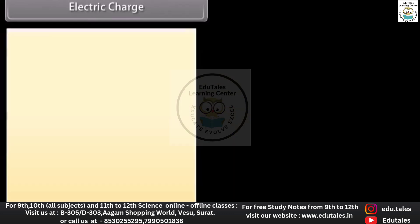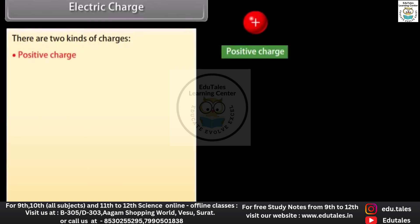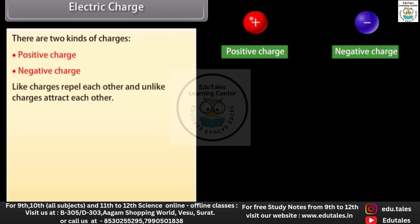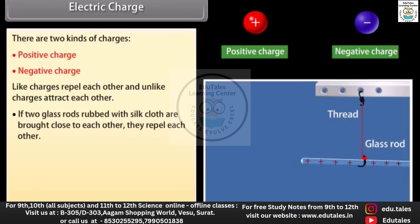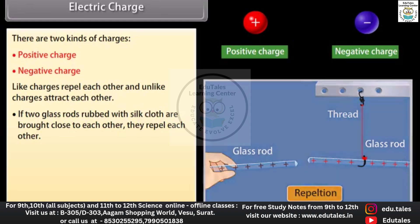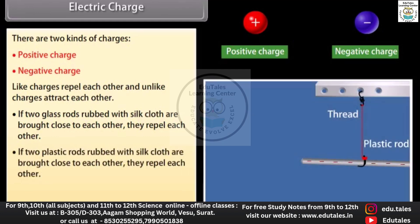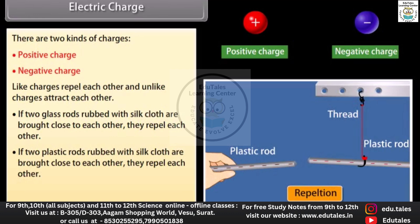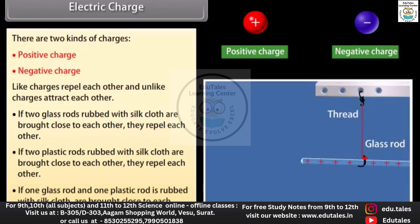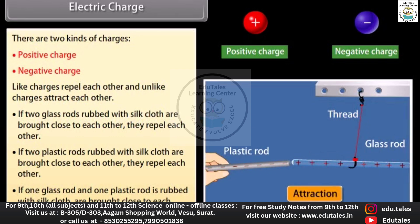Electric charge: there are two kinds of charges — positive charge and negative charge. Like charges repel each other and unlike charges attract each other. If two glass rods rubbed with silk cloth are brought close to each other, they repel each other. If two plastic rods rubbed with silk cloth are brought close to each other, they repel each other. If one glass rod and one plastic rod rubbed with silk cloth are brought close to each other, they attract each other.